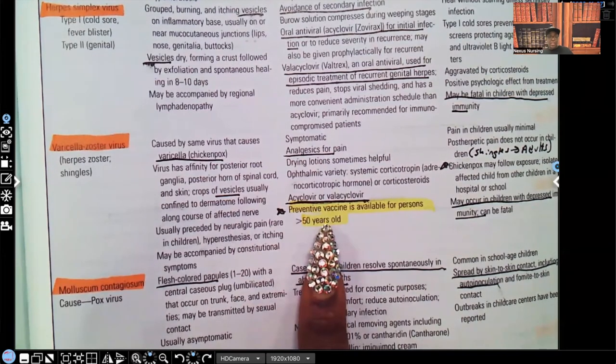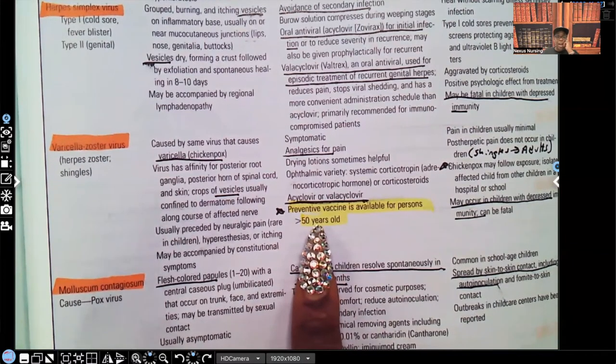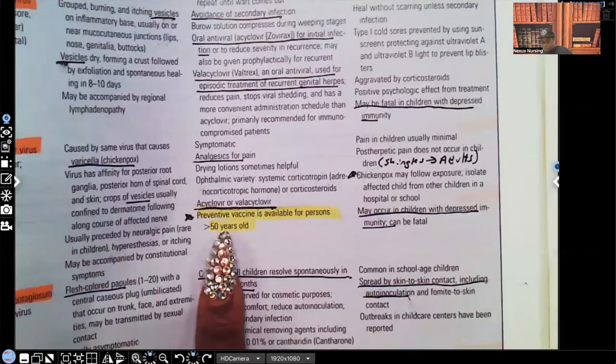Look at this. Prevention of preventative vaccines available for persons 50 years or older. Why? What are we thinking of? Shingles. That's exactly why. This is what they're talking about.